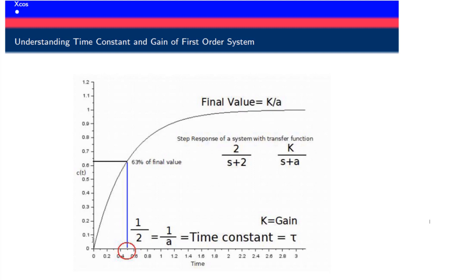If you draw a tangent at the origin of that response curve, you get the value A, which is the reciprocal of the time constant and the initial slope of the curve. This is a first-order system — the maximum power of S in the denominator is one. The time constant is the time at which the system reaches 63% of its final value. So if the final value is one, the system reaches 0.63 at a time equal to 1/A.